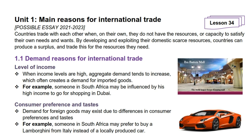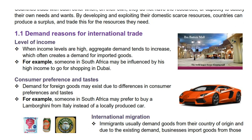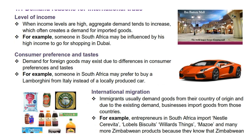We will start with level of income. How do you think the level of income can influence imports and exports? Look at what people do when they start making a lot of money. Do you realize that they start buying Gucci, Rolls Royce and more luxurious goods? The influence in this case is level of income that makes them buy from other countries as opposed to local production. When income levels are high, aggregate demand tends to increase, which often creates a demand for imported goods. For example, someone in South Africa may be influenced by his high income to go for shopping in Dubai.